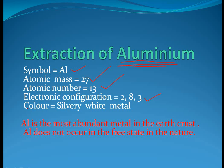The colour of aluminium metal is silvery white. An interesting point about aluminium is that it is the most abundant metal present in the earth's crust among all metals. Aluminium does not occur in its free state in nature because it is a very highly reactive metal, so it cannot exist in the free state.